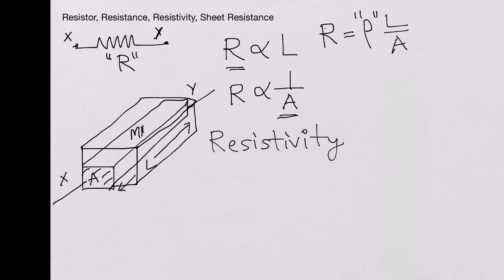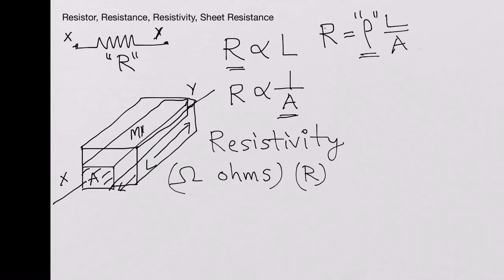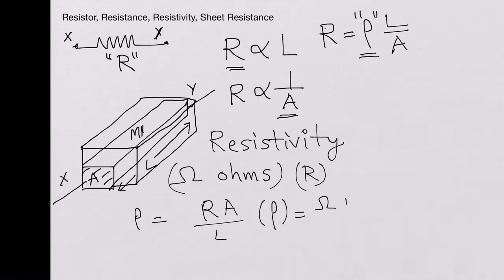Now we look at the units of resistivity. The units of resistance are ohms. Rho can be written as R multiplied by the cross-sectional area over L. So the units of rho are ohms times meter squared over meter, which is ohm·meter. So this is resistivity.